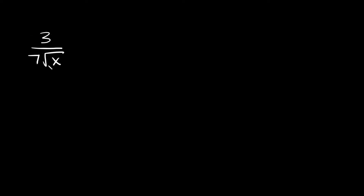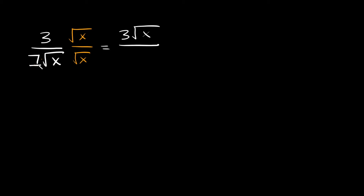Here we have 3 over 7 times the square root of x. This is a little different because there's a 7 out front multiplying the square root of x. To rationalize the denominator you don't have to worry about the 7 — just multiply the top and the bottom by the radical, the square root of x. On top we get 3 times the square root of x, and on the bottom the 7 stays while the square root of x times the square root of x equals x. There's nothing to simplify between 3 and 7x, so the final answer is 3√x over 7x.